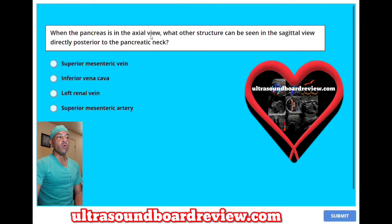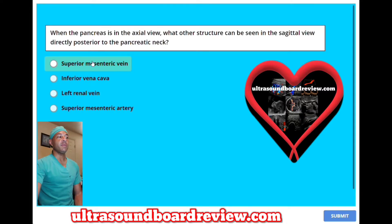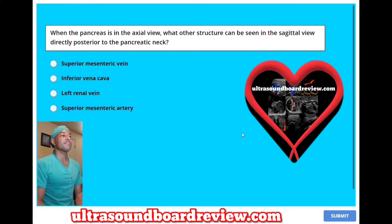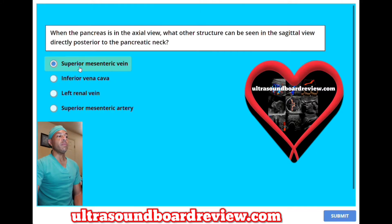When the pancreas is in the axial view, what other structure can be seen in the sagittal view directly posterior to the pancreatic neck? A, superior mesenteric vein; B, inferior vena cava; C, left renal vein; or D, superior mesenteric artery? The answer is A, superior mesenteric vein.